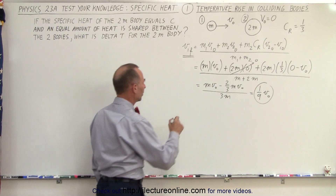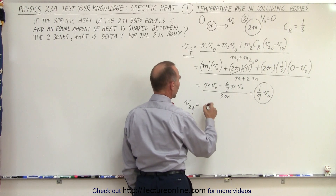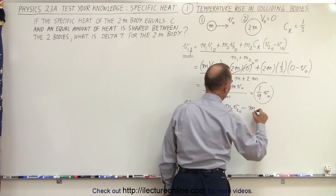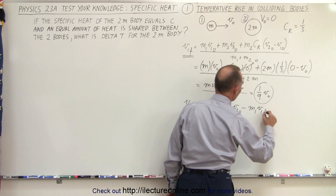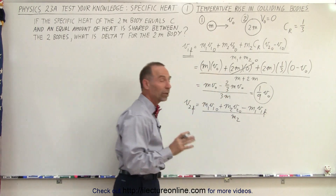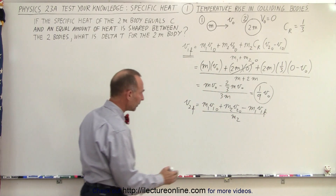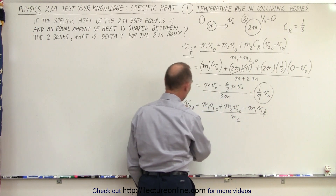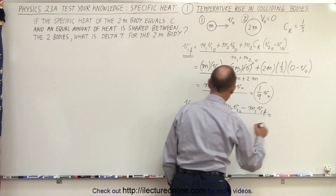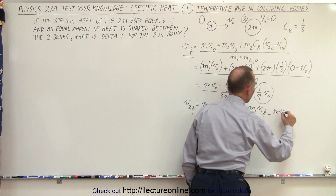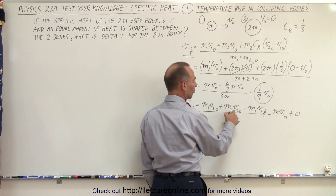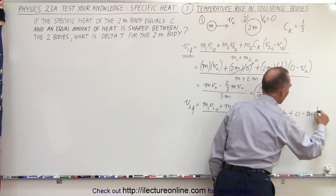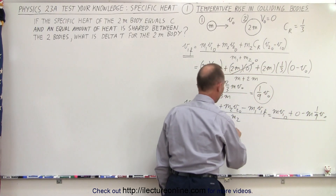What about the final velocity of the large object? We can use conservation of momentum: v2-final equals m1·v1-initial plus m2·v2-initial, minus m1·v1-final, all divided by m2. That comes right out of the conservation of momentum equation — the initial momentum equals the final momentum. So we take the final momentum of the first object, for which we know the velocity, and solve for the velocity of the second object. This will be equal to m·v1-initial, plus 0 (because there's no initial velocity for the second object), minus m times one-ninth v-initial, all divided by m2, which is 2m.